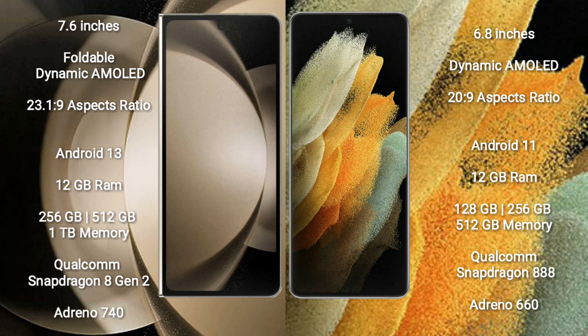Samsung Galaxy Z Fold 5 comes with 12GB RAM and 256GB, 512GB, or 1TB internal storage, with a Qualcomm Snapdragon 8 Gen 2 processor and Adreno 740 GPU. Samsung Galaxy S21 Ultra comes with 12GB or 16GB RAM and 128GB, 256GB, or 512GB internal storage, with a Qualcomm Snapdragon 888 processor and Adreno 660 GPU.